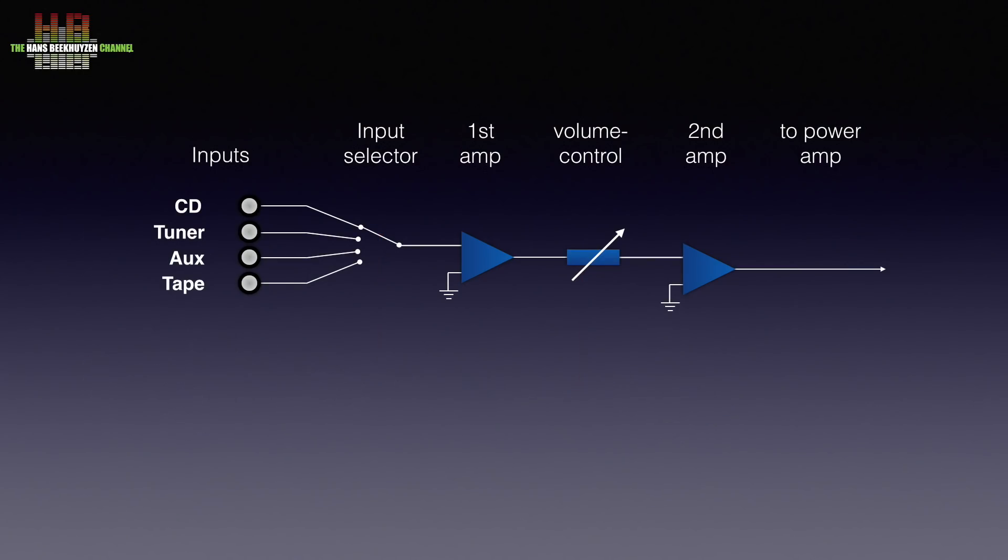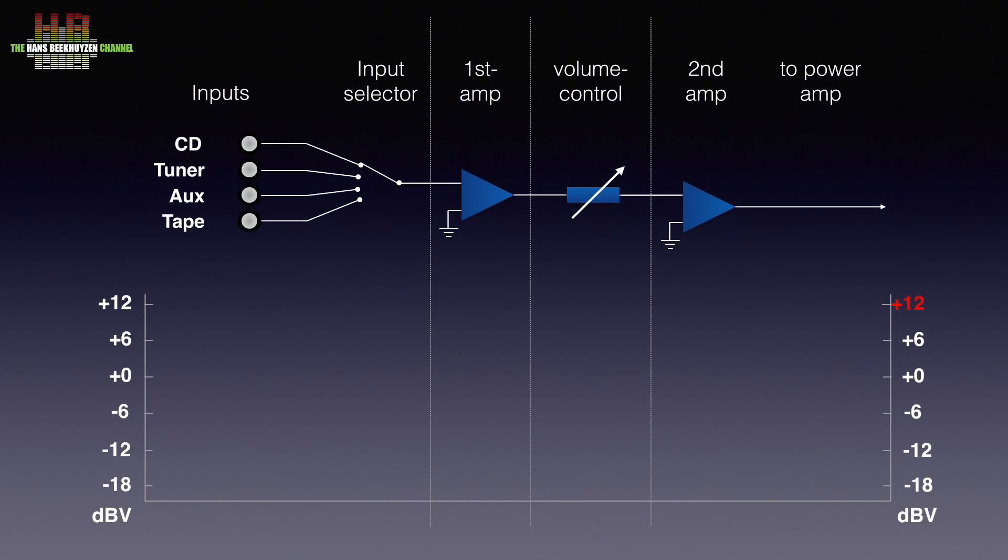Let's go back to the schematics. Let's first drop the right channel. Since both channels work the same, it suffices to look at only one. This gives me room for a so-called gain structure graph. It sounds difficult, but it just shows the voltages in the stages of the pre-amp. How does it work?